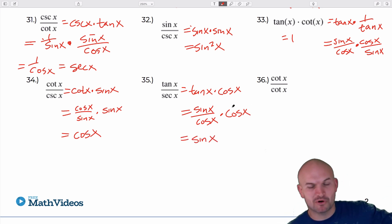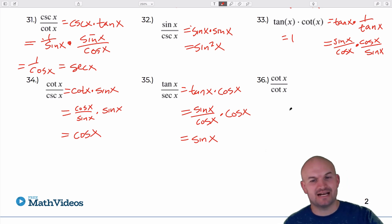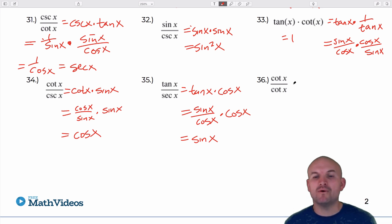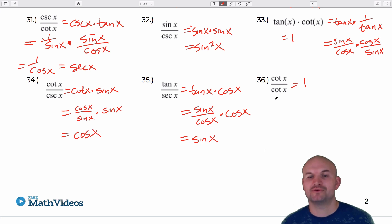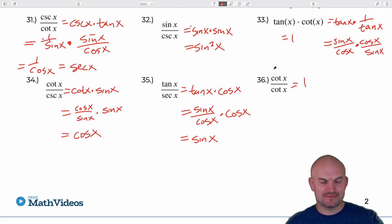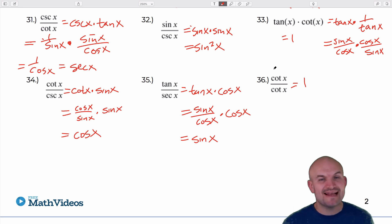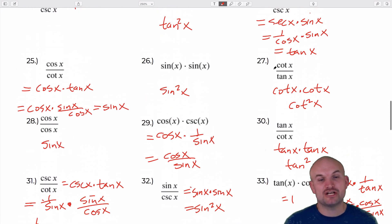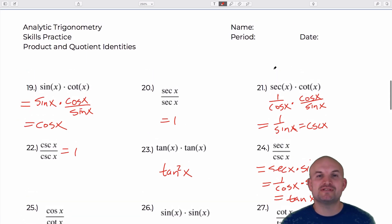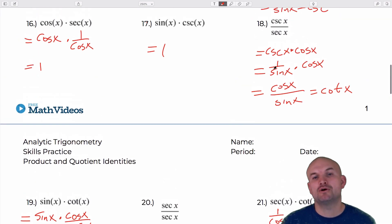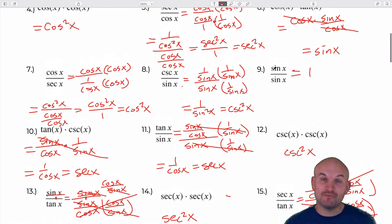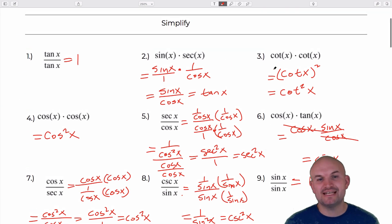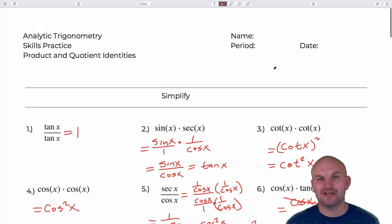Last but not least, a function divided by itself is always going to equal one. So there you go, ladies and gentlemen — 36 examples of simplifying trigonometric expressions using product and quotient identities. I hope this was helpful and I look forward to seeing you on the next video. Cheers.